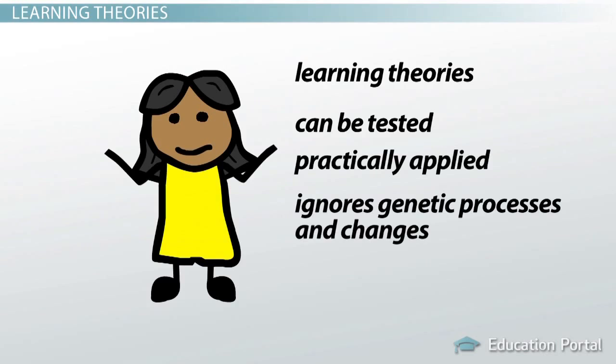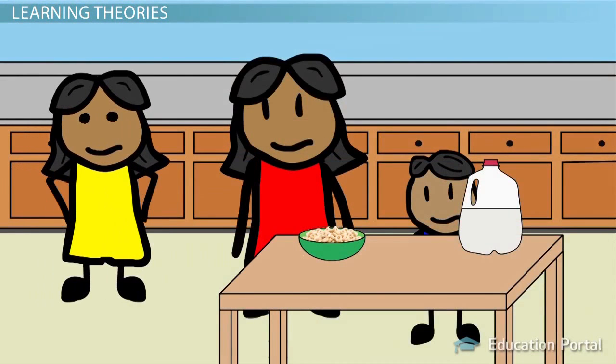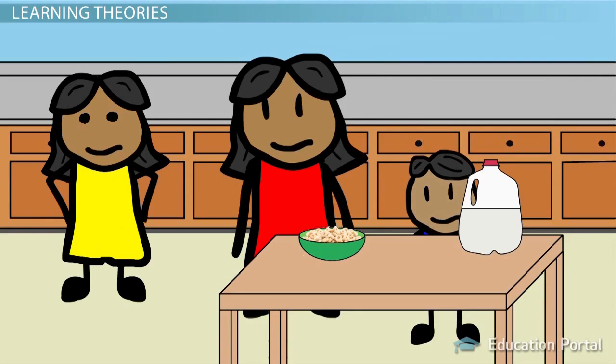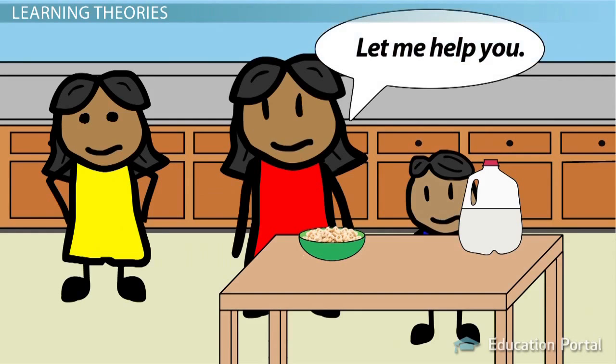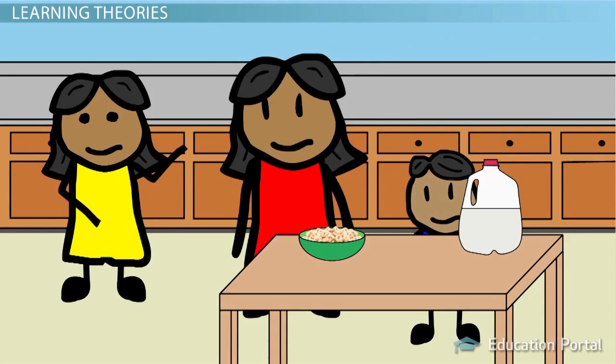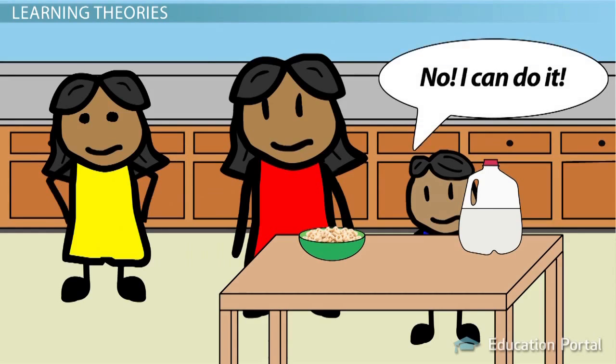Think back to Timmy's behavior again. Learning theory might explain his actions as a learned response. Timmy knows that if he tries to make his own cereal when his mother's around, she will try to help him. If he acts out when she does this, he gets the attention that he is seeking. His mother's attention reinforces the response, and he learns to repeat the acting out behavior.